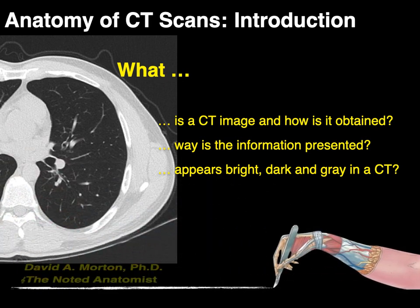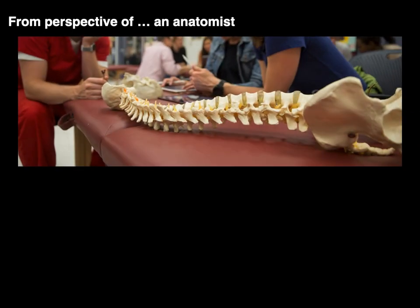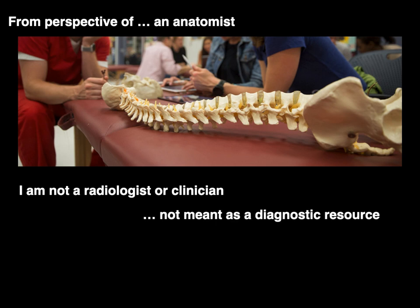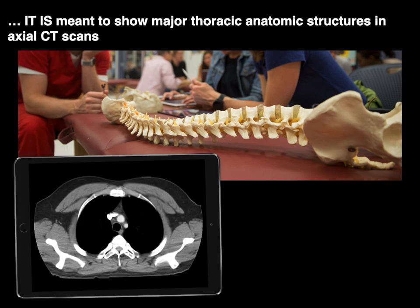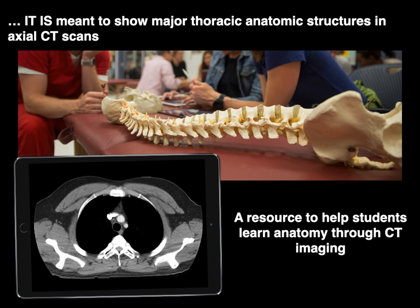Hello, everyone. My name is Dr. Morton, and I'm a noted anatomist. This is going to be from the perspective of an anatomist — I'm not a radiologist, I'm not a clinician — so this is not meant to be a diagnostic resource or a resource for the way radiologists look at axial CT images. It's meant to show the major thoracic and anatomic structures in axial CT scans. You're going to be looking at anatomy through CT images — it's a resource to help students learn anatomy through CT imaging and to help you get your radiology eyes.